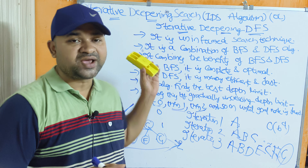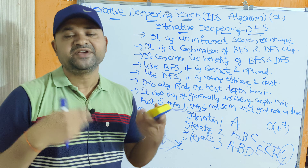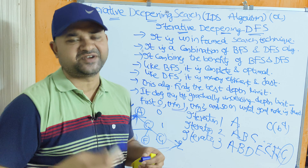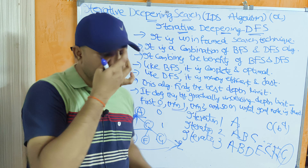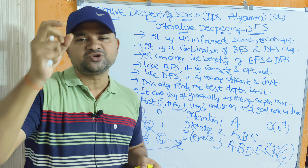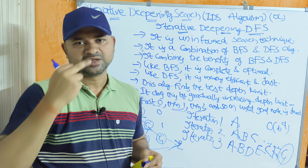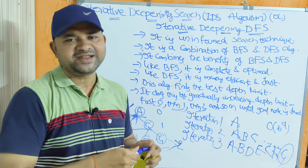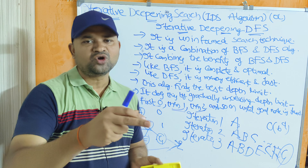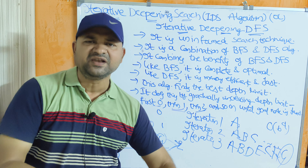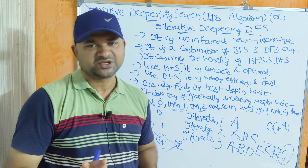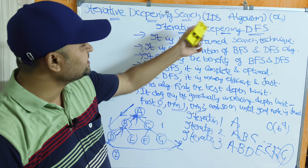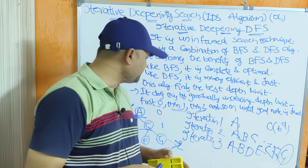This illustrates the advantage of IDS: rather than using a fixed predetermined depth limit as in depth-limited search (where if the goal is not found the search is incomplete), IDS keeps increasing the depth until the goal is found. This is the core idea of iterative deepening depth-first search.